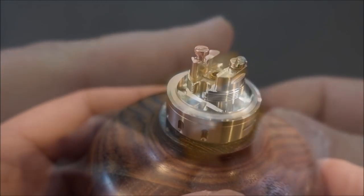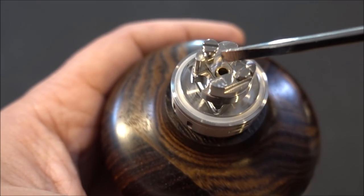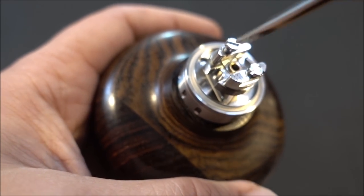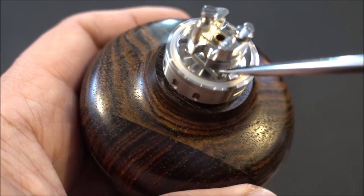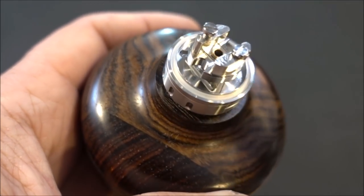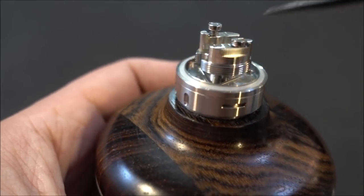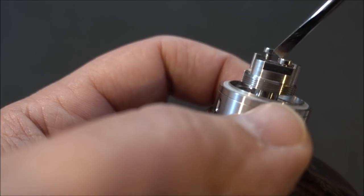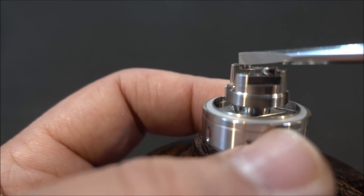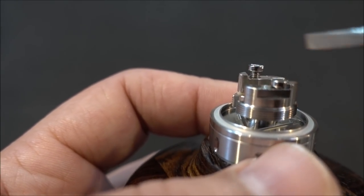And there is the build deck. So we have our airflow in the center, cotton goes down here, then it's got this triangle shape on the bottom which I'll show you guys what that does. Two post screws, two beefy flathead screws, and your wire clamps right inside here on both sides.